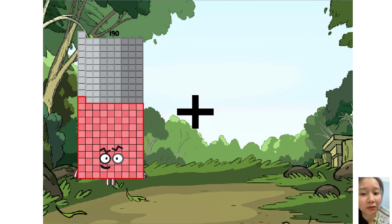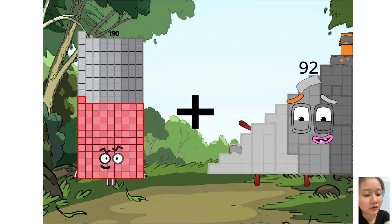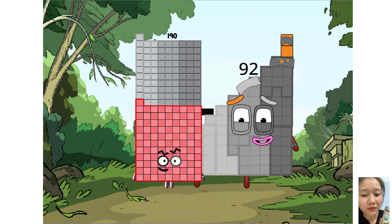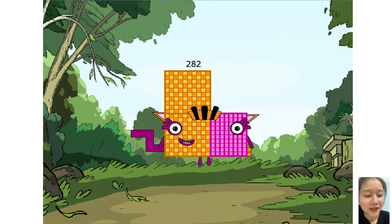190 plus 92 equals 282. This is quite a difficult calculation, but you are just a reserve.